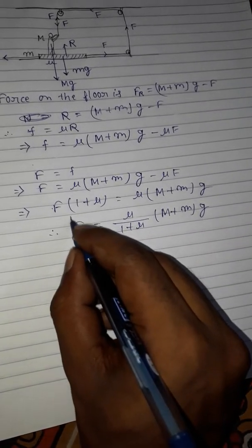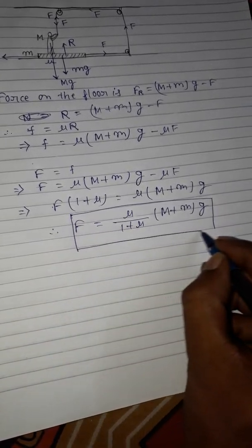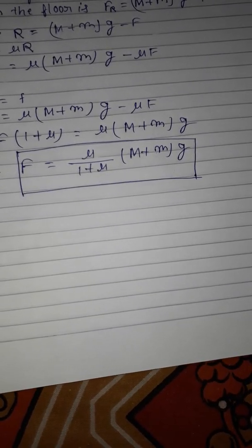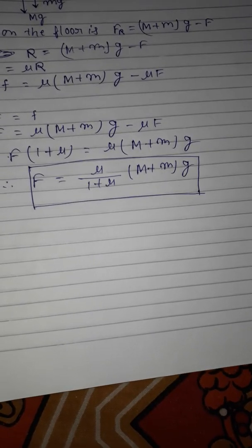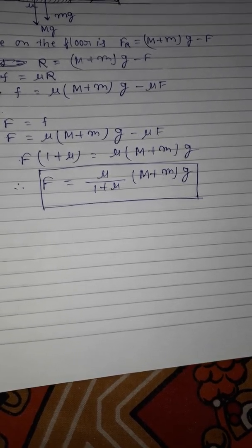So the maximum force that can be exerted on the rope by the man is F equals μ/(1 + μ) times (M + m)g, where M and m are the masses. Thank you.